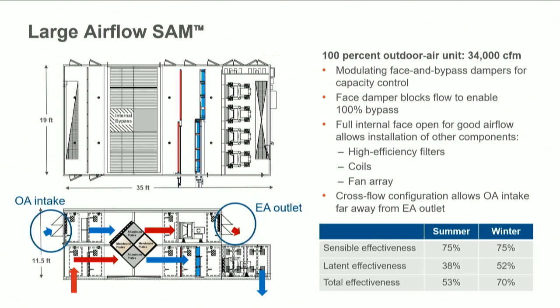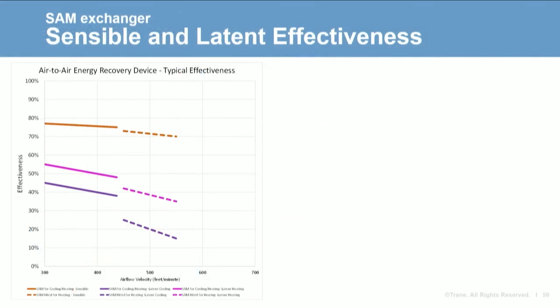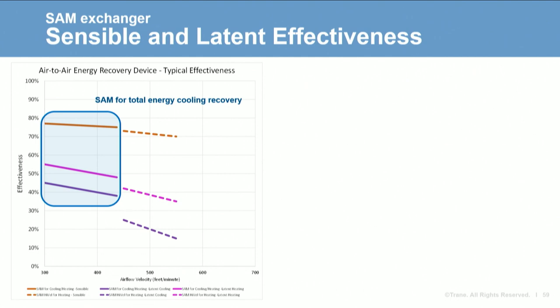SAM used for cooling recovery, with a target of 50% total effectiveness, will be used at a similar air handler face velocity as a membrane exchanger — 300 to 400 feet per minute for optimum performance versus footprint required. SAM will have a sensible effectiveness of 72 to 77%, with a latent effectiveness in summer of 38 to 45%, for a total effectiveness of 50 to 54% during summer peak cooling. Total effectiveness during winter heating will be in the range of 68% to 72%.